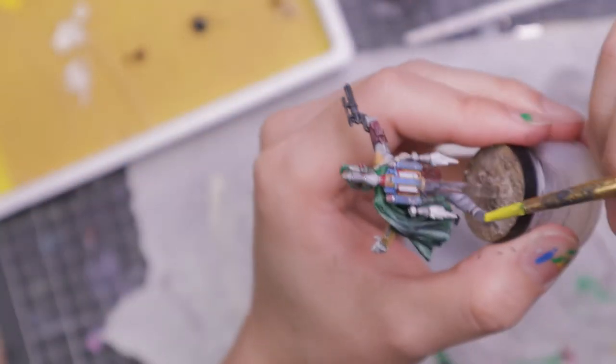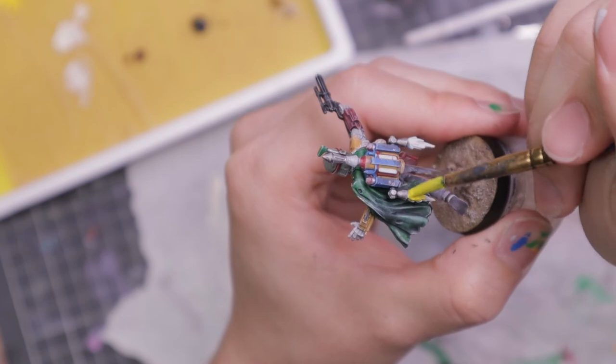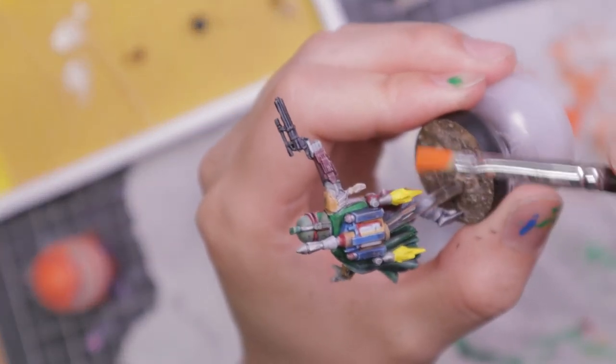Now I'm going to base the fire from the jetpack. The thrust is yellow, and I'll dry brush the tips orange for a nice gradient.